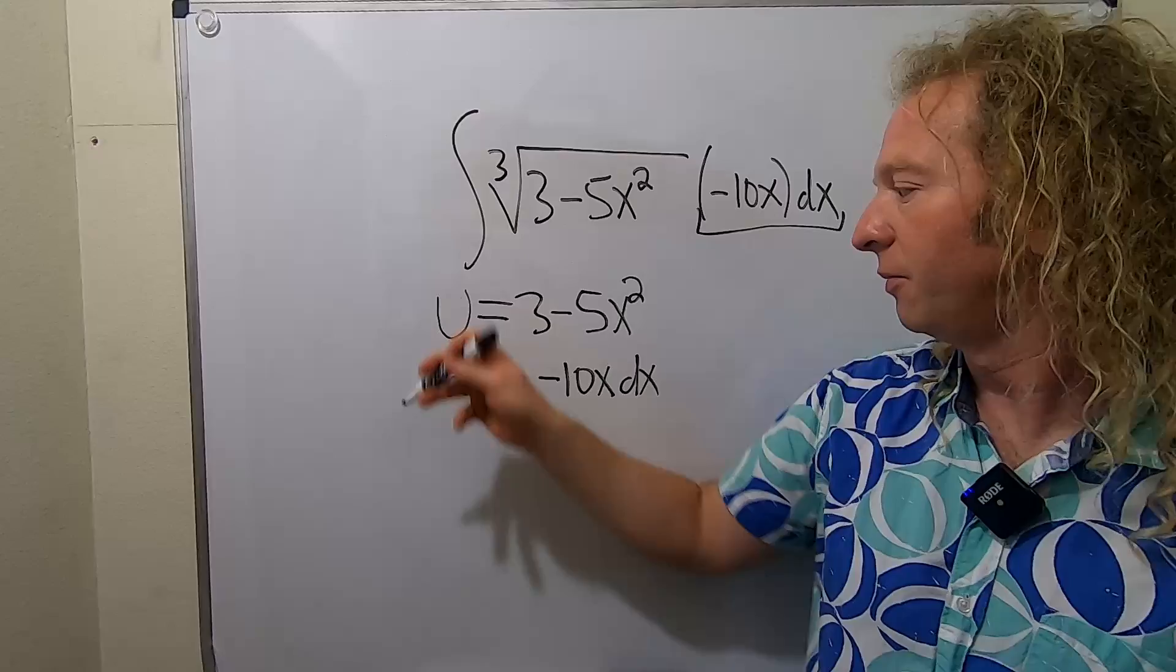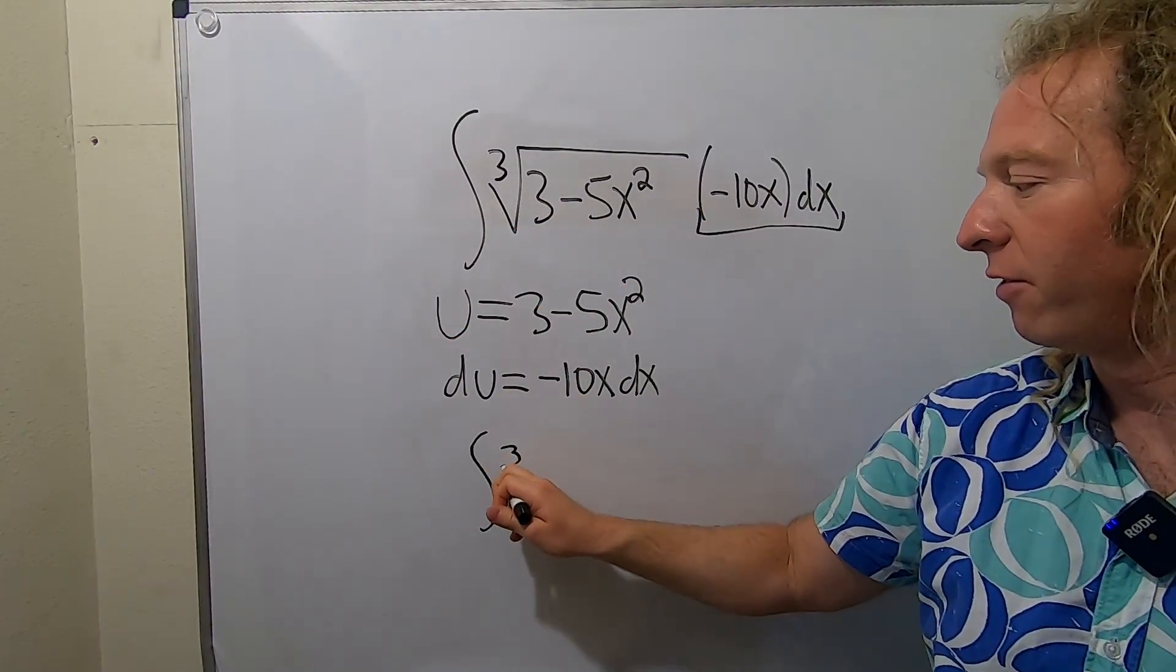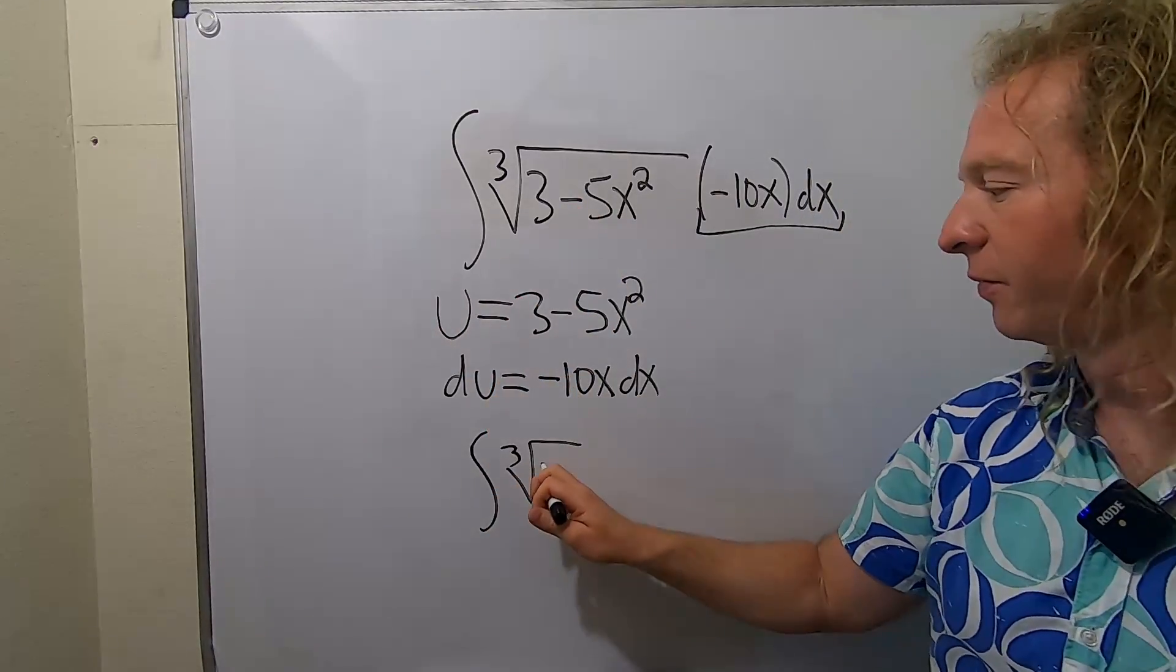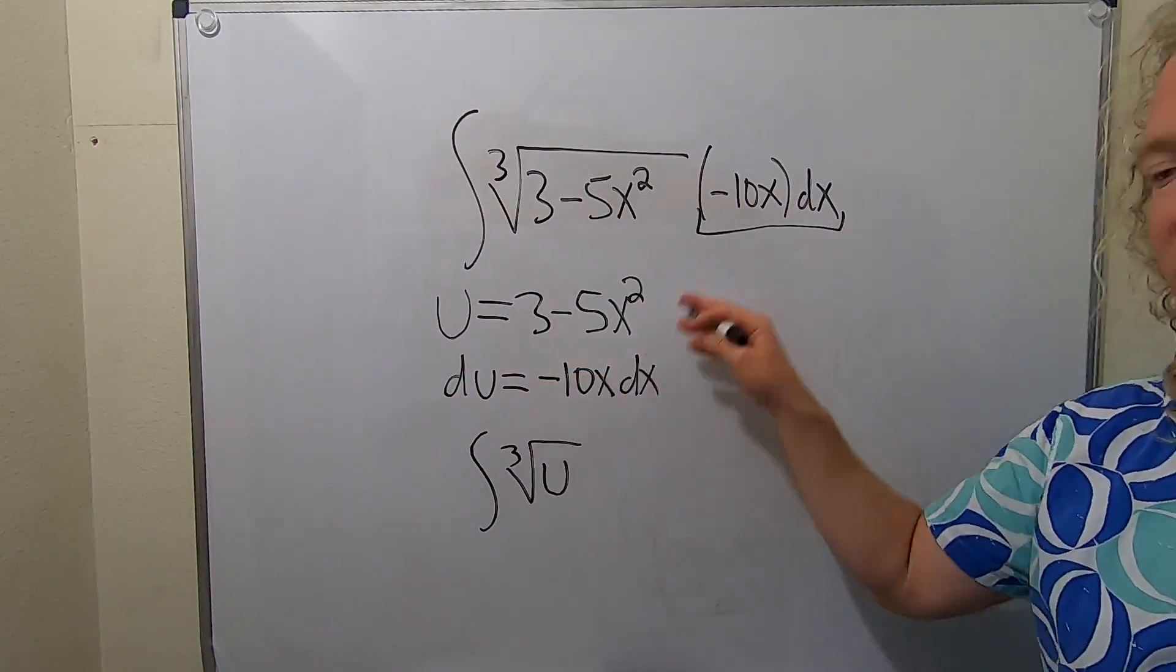So this integral, we keep it here. This is the cube root of, well let's see, this piece here is u, so we just call it u. And what's left over here is exactly du, so du is all of this.